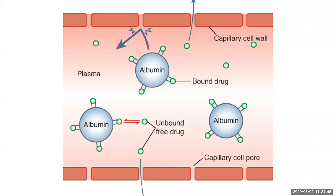Just like restaurants, some may be larger with more tables, or more popular with more people wanting to get in. That analogy illustrates that some drugs have a high affinity for protein binding and some do not. Drugs with a high affinity for protein binding require a higher dose to ensure enough free drug is available to be active. This is determined during research and development by pharmaceutical companies — if a drug has low affinity for protein, we don't need to give doses as high.